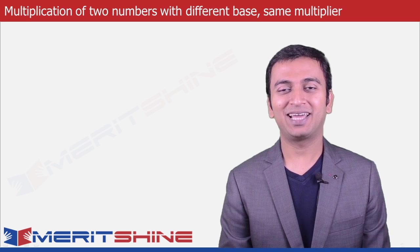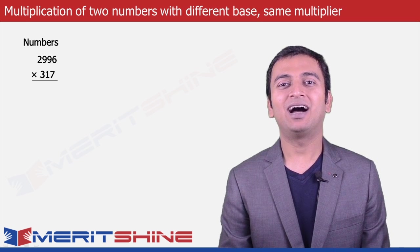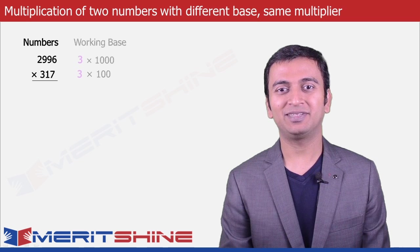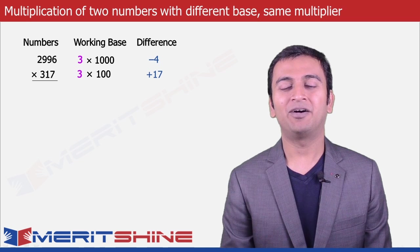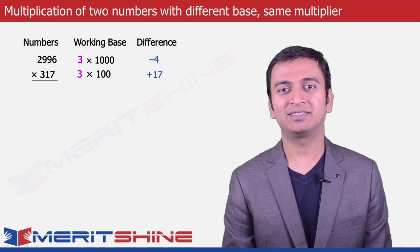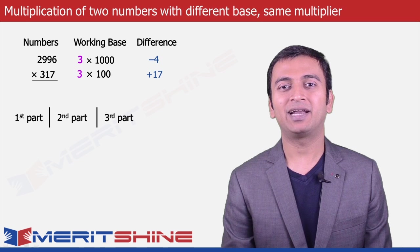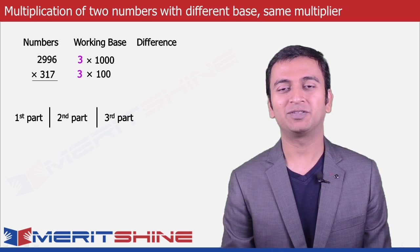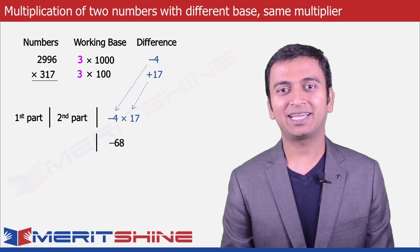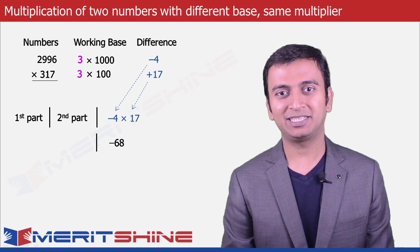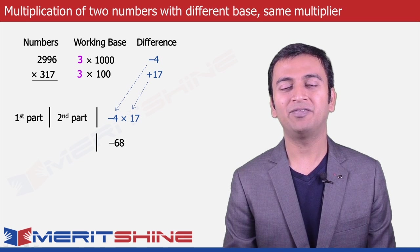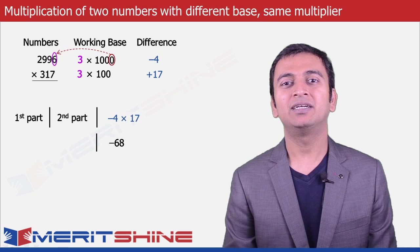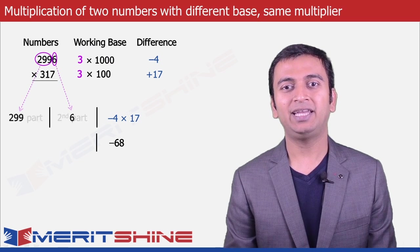Let us try to multiply 2996 into 317. Here our working bases would be 3 into 1000 and 3 into 100 respectively, and the differences would be minus 4 and plus 17. We can proceed to write down our answer in 3 parts. Let us begin by writing the third part first, which would be minus 4 into 17, giving us minus 68. To obtain the second part, we take the larger number and choose as many digits from the right as is the difference in the number of zeros in our working base, which in our case is 3 minus 2, which is 1. So we will split 2996 as 299 and 6.